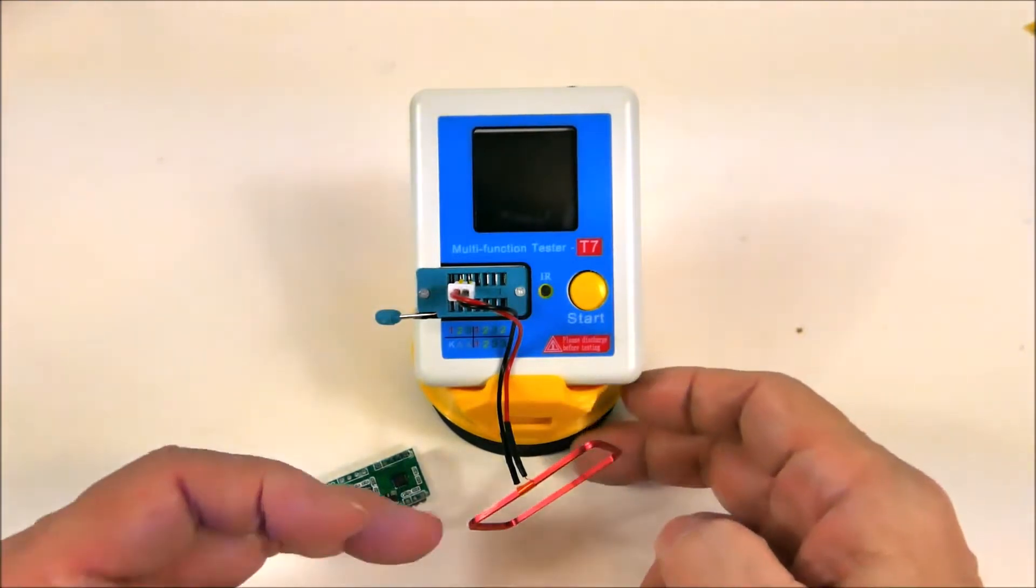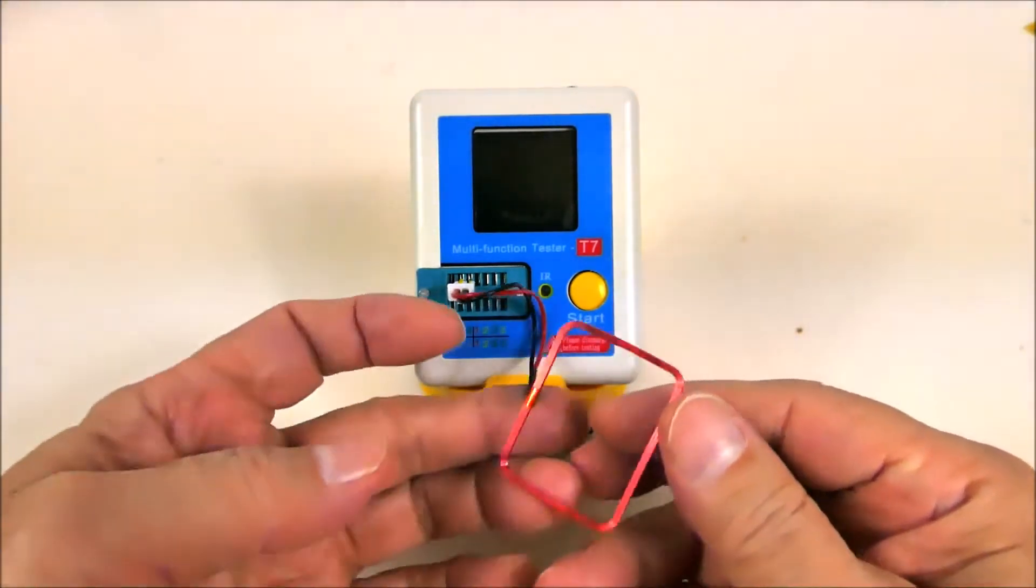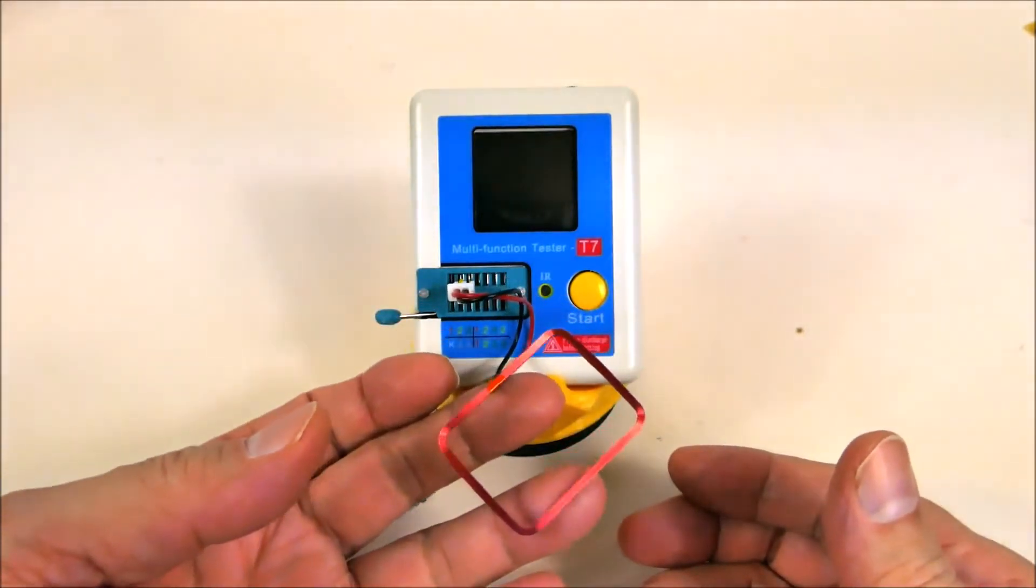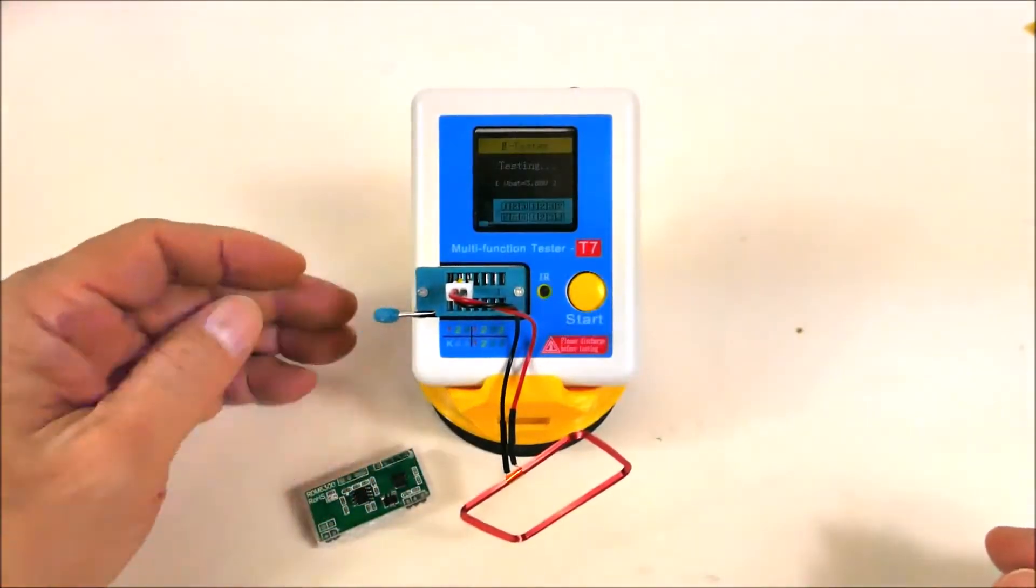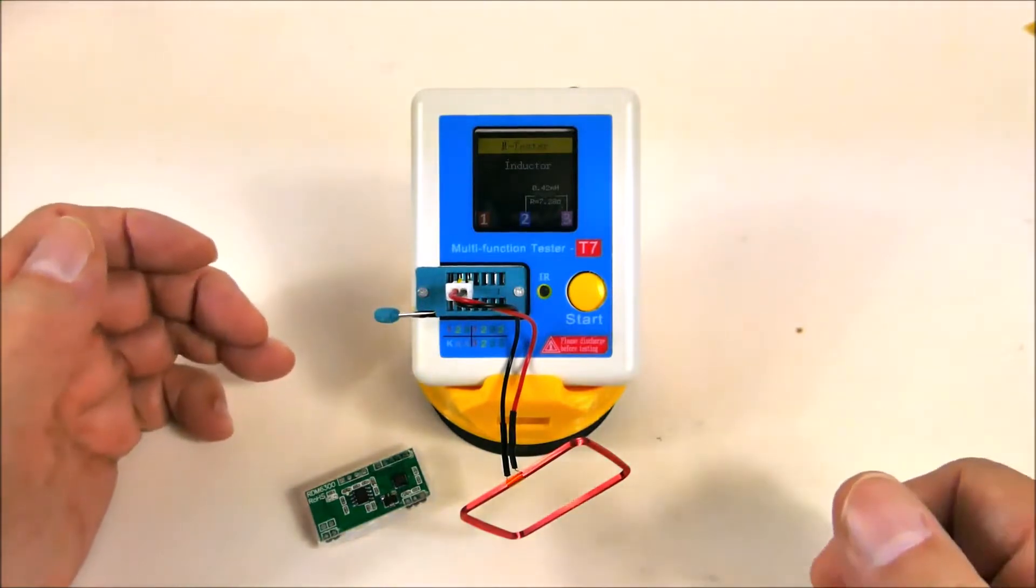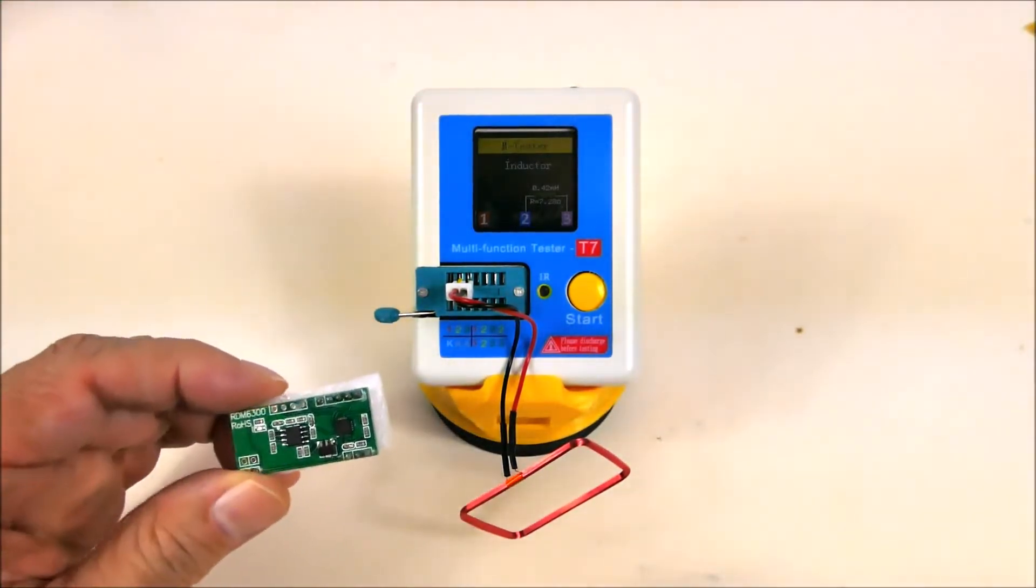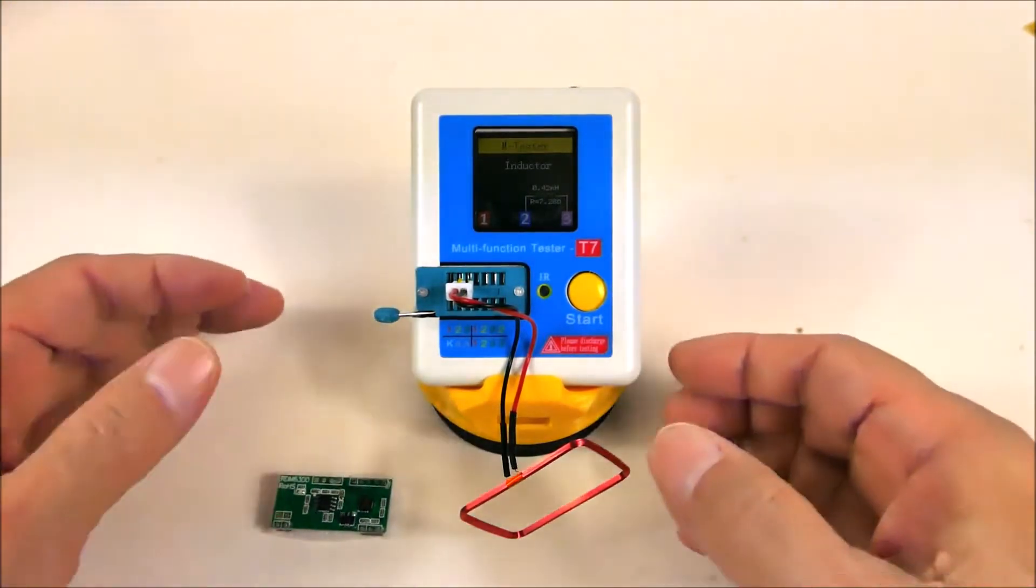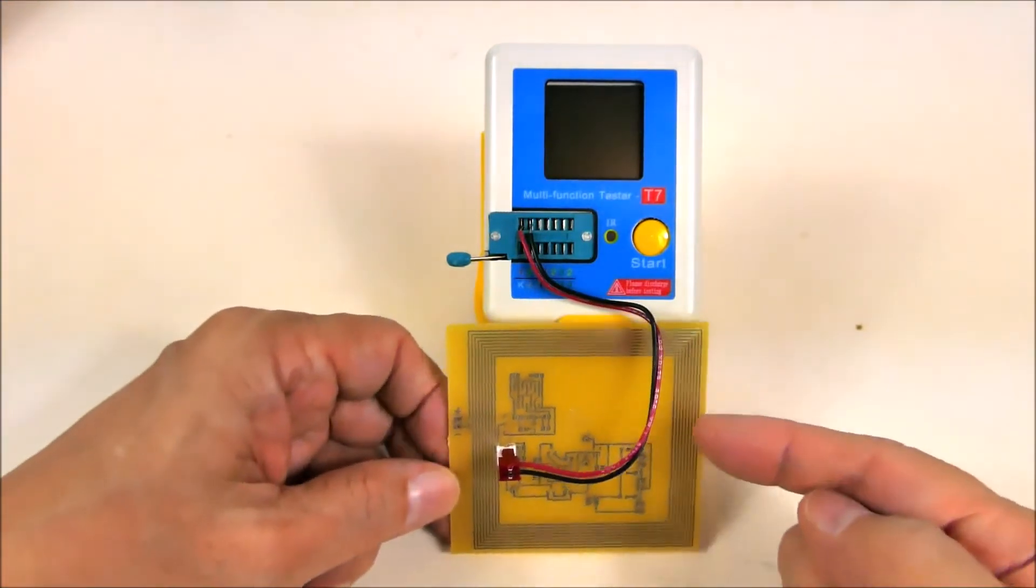The inductance of this RDM 6300 magnetic antenna or coil antenna is 0.42 millihenrys with a resistance of 7.2 ohms. This is a 125 kilohertz RFID module. The impedance of this coil, which is a printed circuit